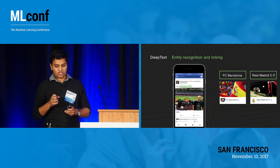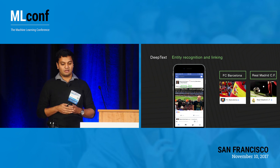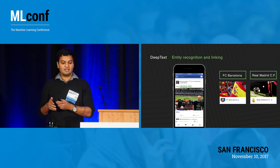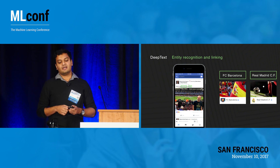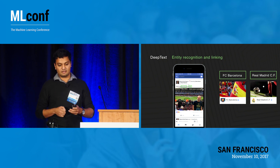Another problem we've been looking at a lot is what we call the entity linking problem. Even if our models can figure out that Barcelona and Real are named entities, we still need to map them back to the actual football clubs themselves and not map Barcelona to, say, the Barcelona airport. This is another area where we're investing quite a bit because it's key to giving a really compelling user experience.